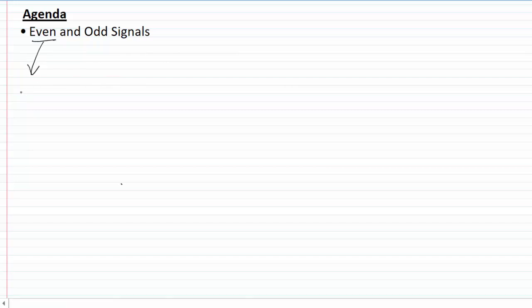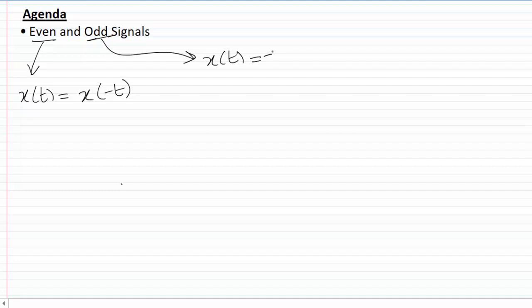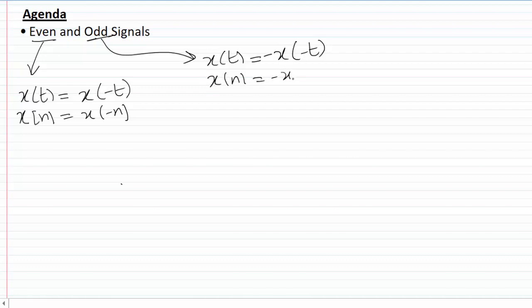In this video I'm going to talk about another useful property of signals related to their symmetry, called even or odd signals. A signal is called an even signal if x(t) equals its time reversal x(-t), and it's called an odd signal if x(t) equals minus x(-t). For the discrete time case, it's an even signal if x[n] equals x[-n], and an odd sequence if x[n] equals minus x[-n].